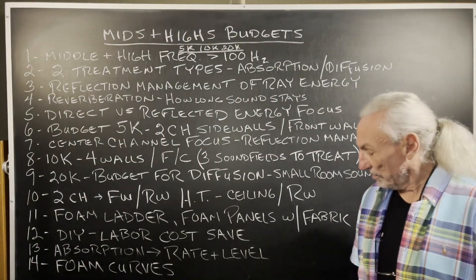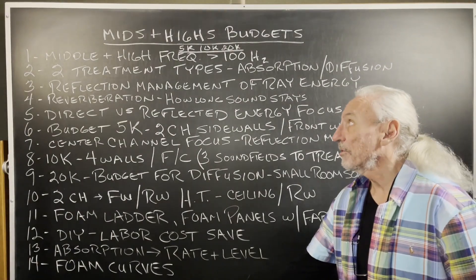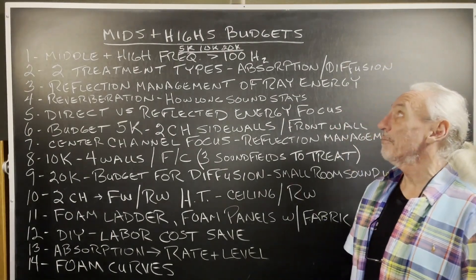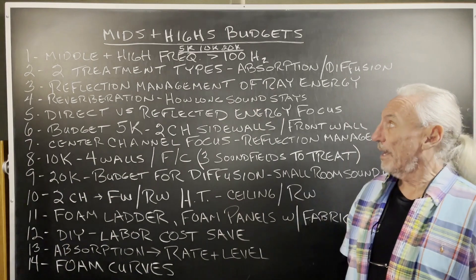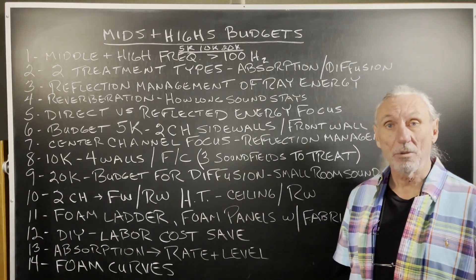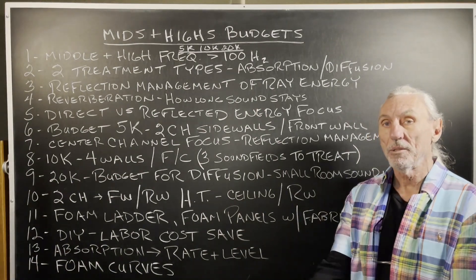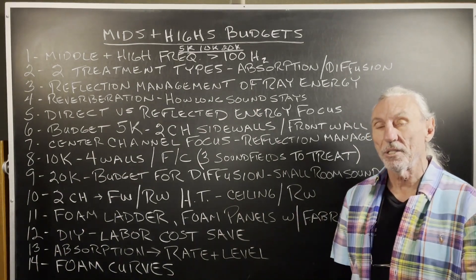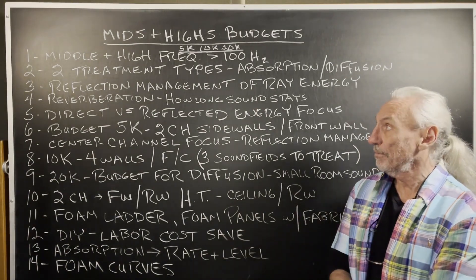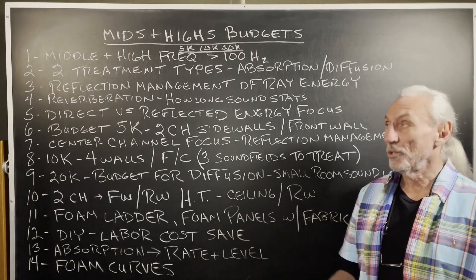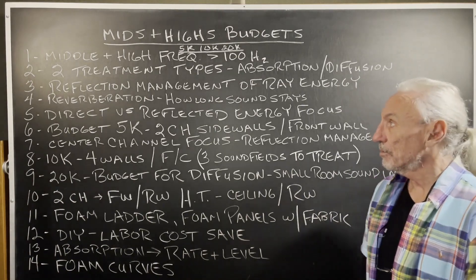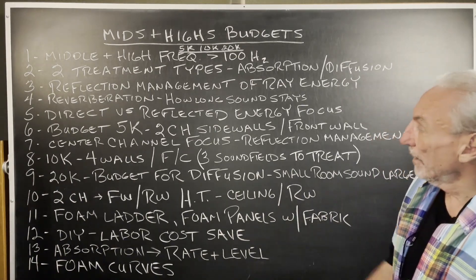Hi everyone, Dennis Foley from Acoustic Fields. Today we're going to talk about mid and high frequency budgets — 5k, 10k, 20k. We see budgets like this; this is the range from low to high that we really see. So let's see how we would distribute that.